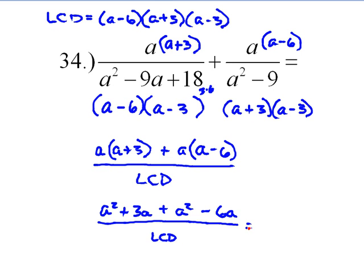So we'll combine like terms. 2a squared minus 3a over the least common denominator. So the only difference in this one is we have to factor our trinomial.